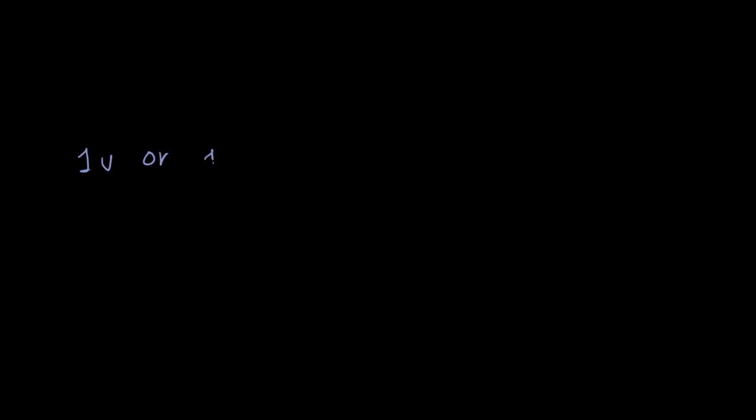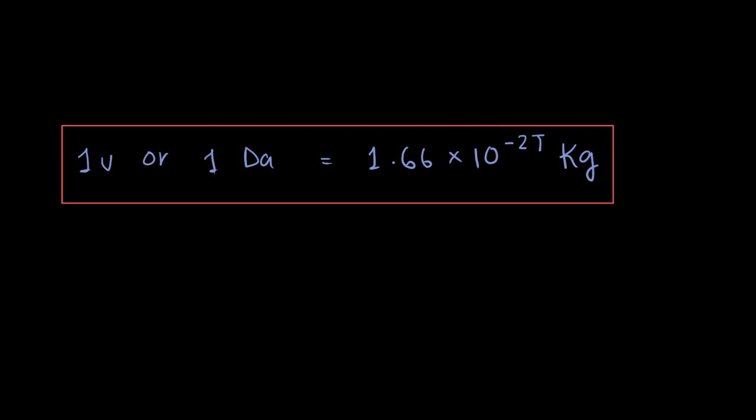Let me show you how that conversion works. So one u or one dalton equals to 1.66 × 10^-27 kg. Let me put a box around it so you know that it's very important. I encourage you to check the interesting lore behind this conversion, it's pretty interesting.